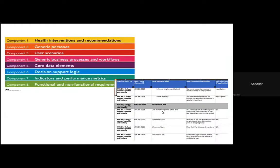For this particular DAK for the ANP, the requirements are based on systems that provide the functionality of digital tracking and decision support, and include among other components core data elements and decision support logic. This documentation will be used in this project with the ANP to include international WHO recommendations for ANC in a tracker to improve the government health system, informing evidence-based policies and other initiatives.